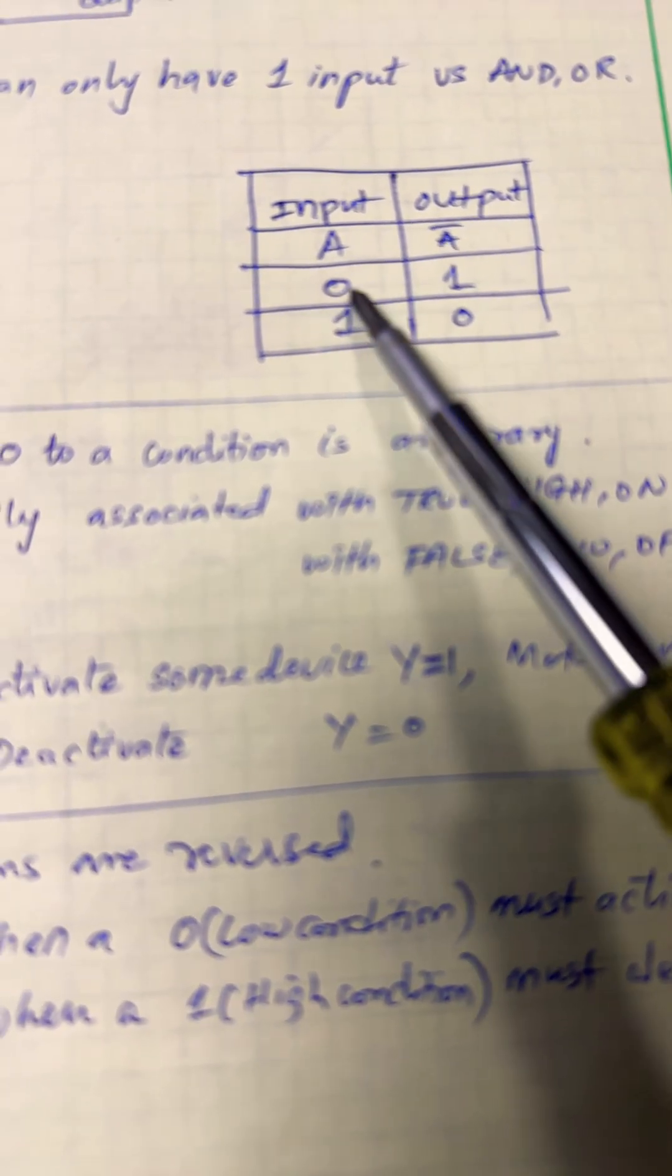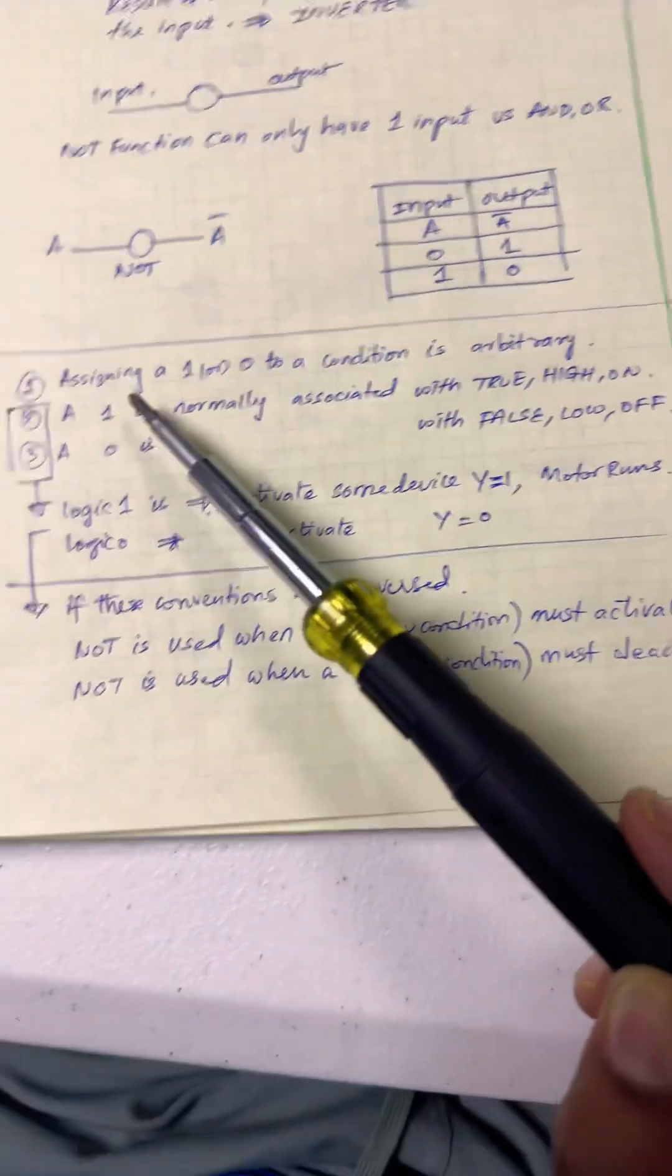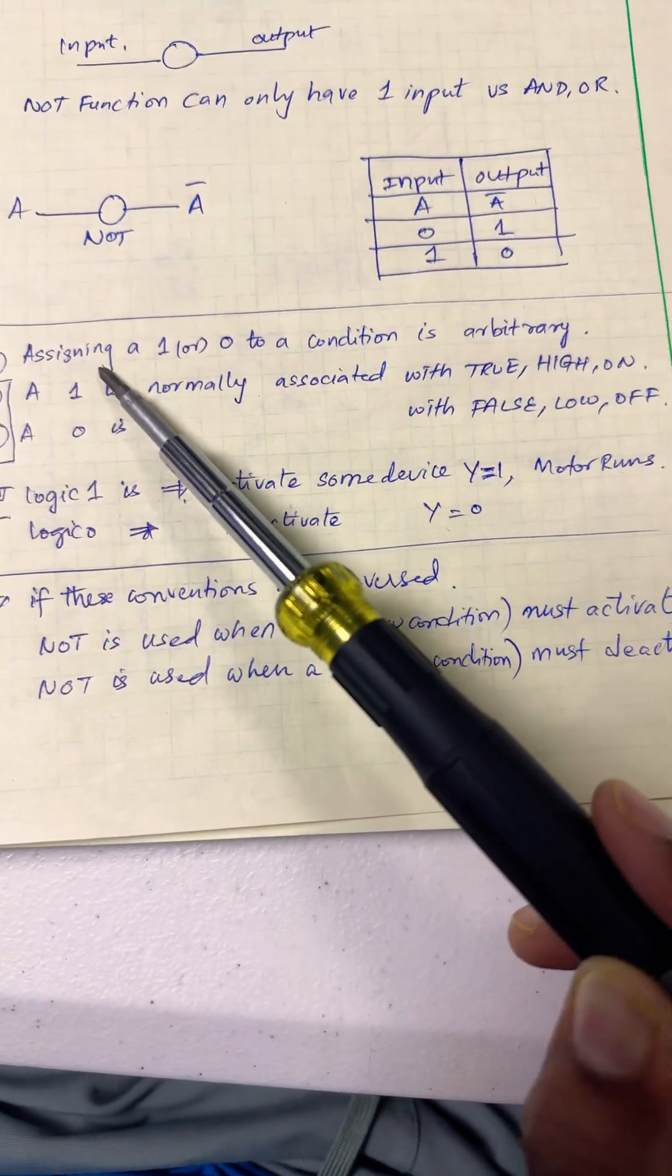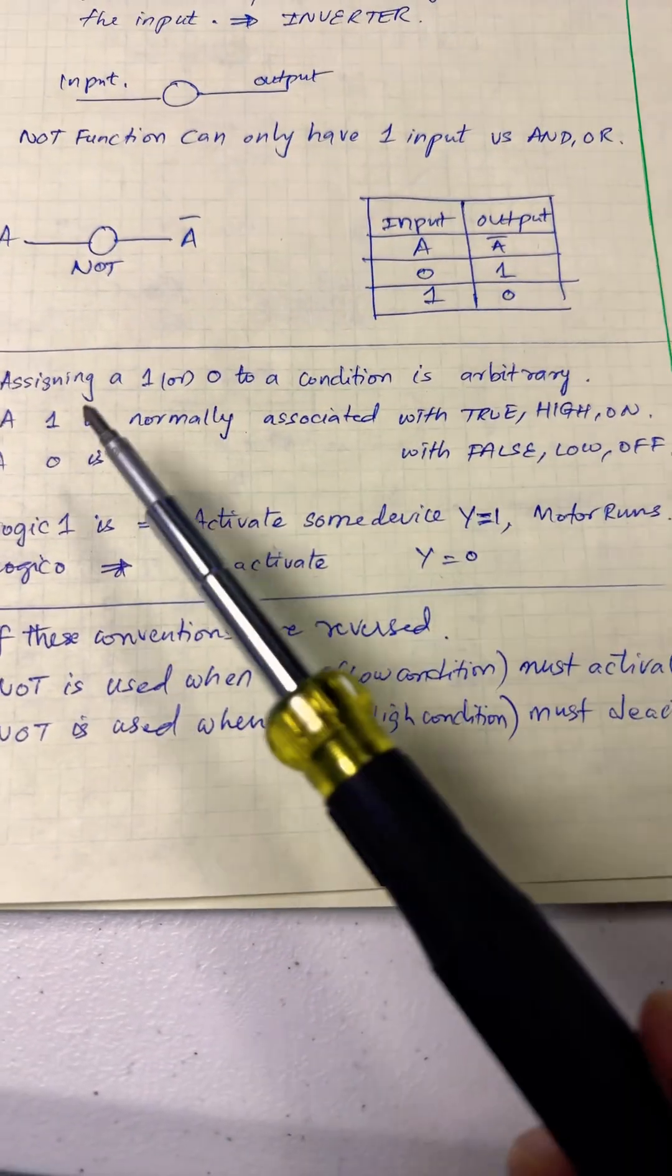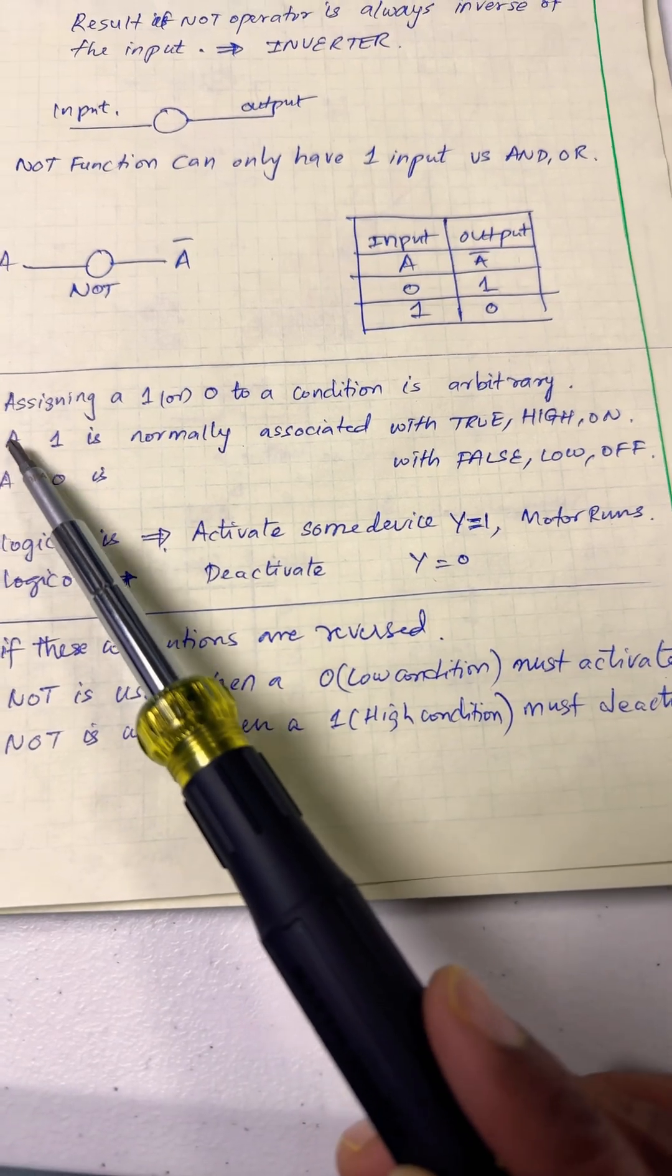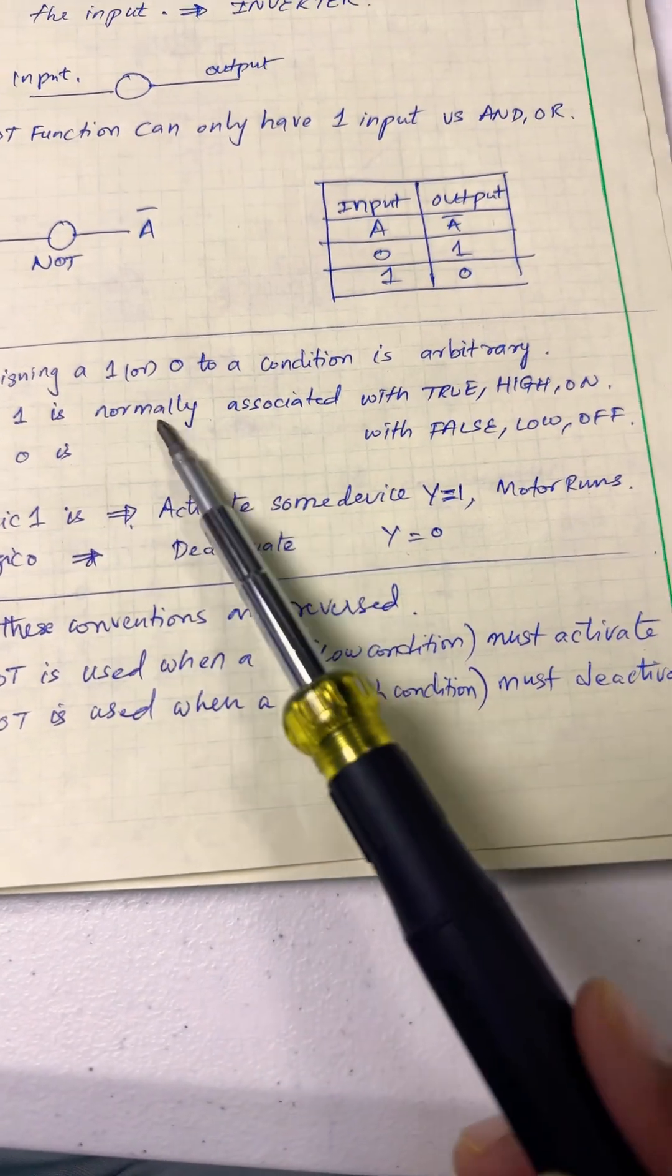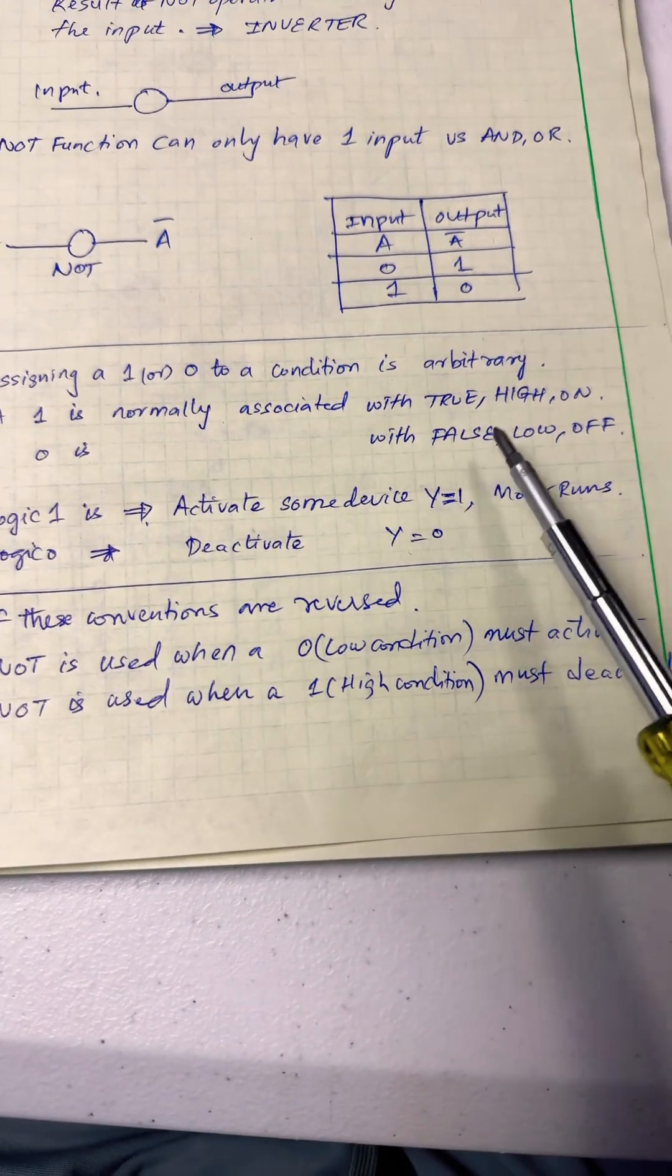Assigning a one or zero to a condition is arbitrary, but in positive logic, one is normally associated with true or high, and zero is normally associated with false, low, or off.